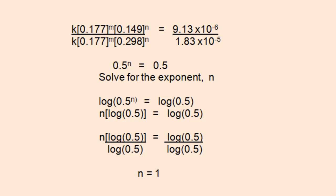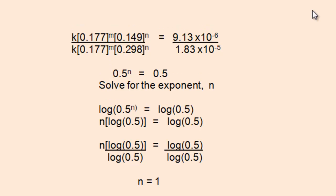What remains is a math problem. We can see that k will cancel out because the rate constant is the same for both rate laws. The concentration 0.177 raised to the n power is identical to the 0.177 to the n power in the denominator, so that cancels out. So you're left with 0.149 to the n power over 0.298 to the n power equals the two rates that correspond to those first two experiments: 9.13 times 10 to the minus 6 and 1.83 times 10 to the minus 5.